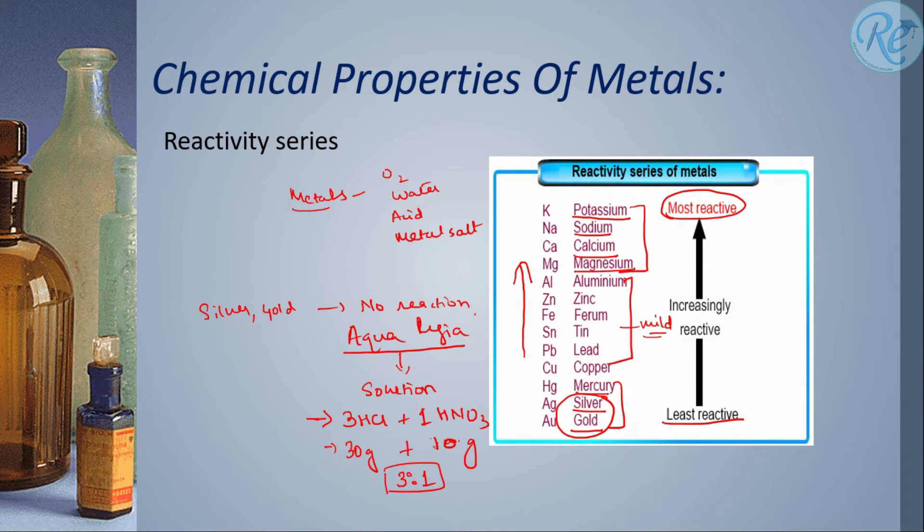And the importance of aqua regia is that it is used to dissolve these highly unreactive metals that is gold and silver. And that's how we use them for making jewelry.